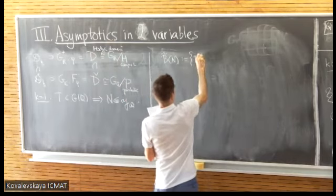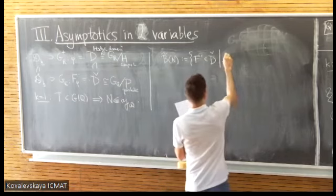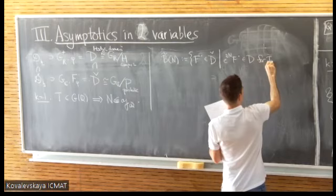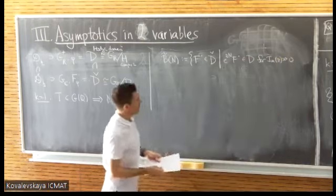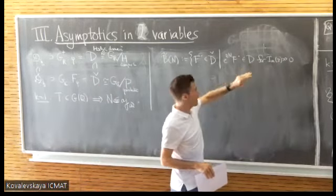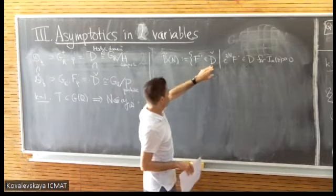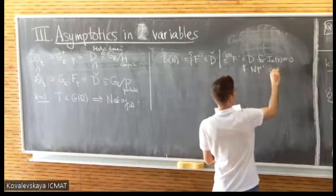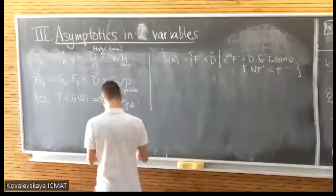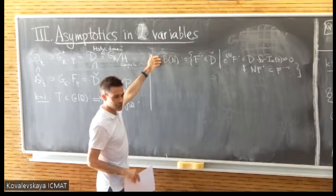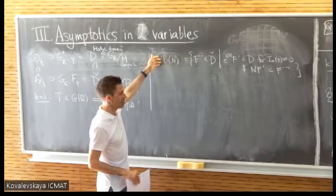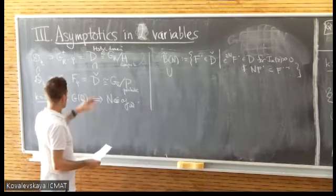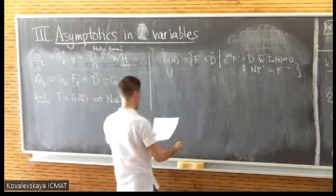To define boundary components: I want all F-dots in D-check such that E^{zN} F-dot, which is my F-infinity, is in D for the imaginary part of z much larger than zero. This is a property all nilpotent orbits have. I also need transversality: N must send F-dot into F-dot minus 1 at worst. My first paper with Greg Perlstein presented these as iteratively fibered varieties over a Hodge domain, where fibers record extension classes of mixed Hodge structures.